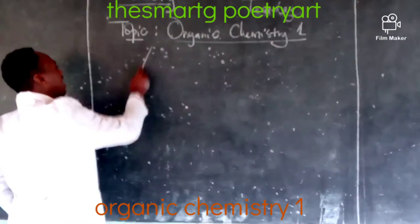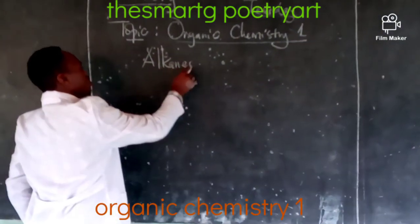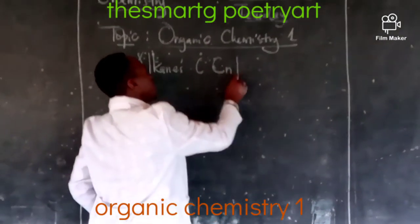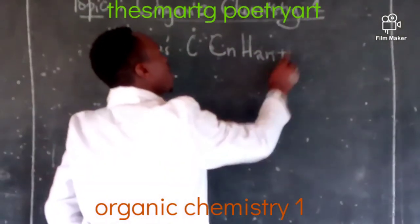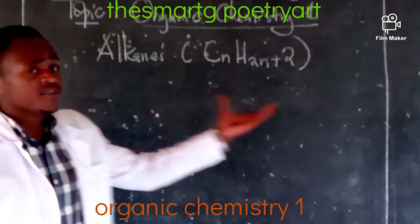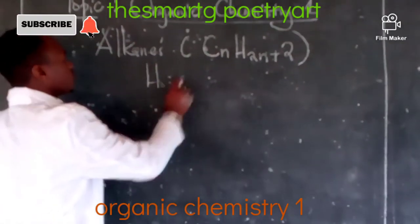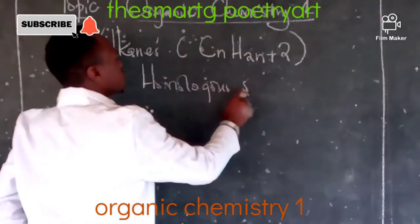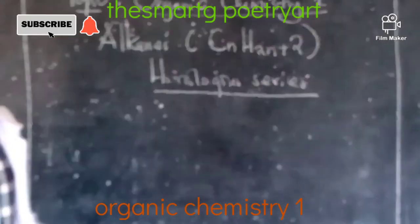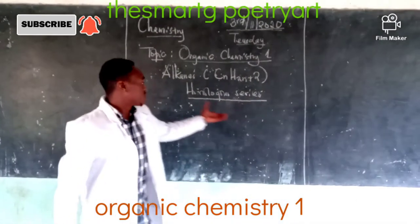For instance, we are going to look at what we call the alkanes. The alkanes, of which the general formula is CnH2n+2. That's the general formula for the alkanes. Remember, this homologous series — each series of these hydrocarbons has 10 compounds.